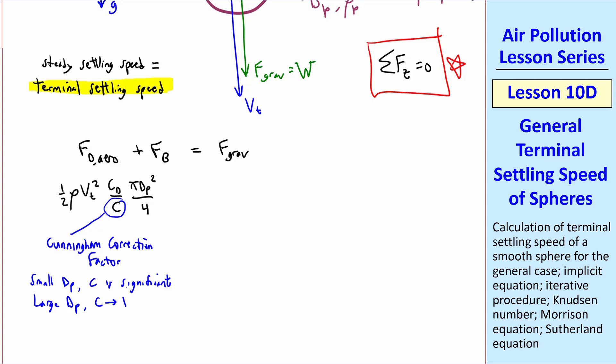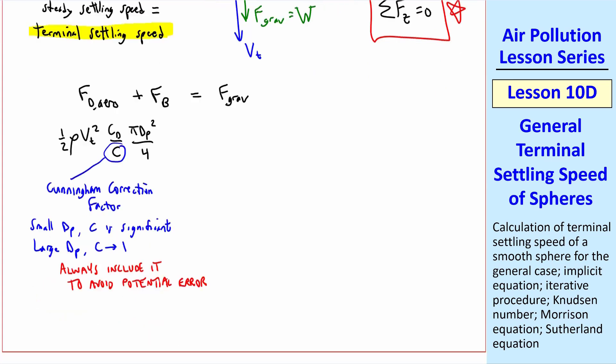For small dp, C is significant and must be included. For large dp, C goes to 1 and does not need to be included. But I advise you to always include it to avoid potential error, especially since we'll use software to do the calculations. Once you have it programmed in, you don't need to worry about it anymore.